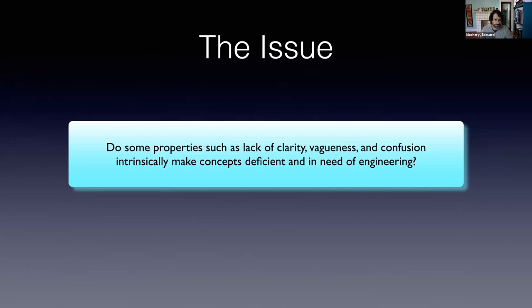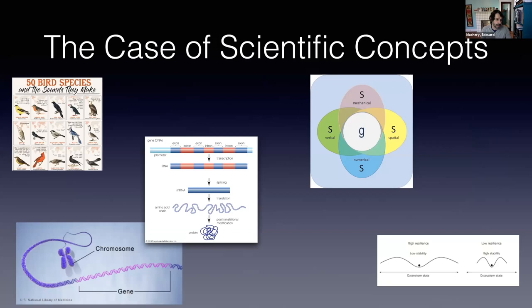For various reasons I will be focusing on scientific concepts. One reason is that the notion of explication, which is often for me the starting point of discussion, was originally formulated by Carnap in the context of developing concepts useful for science. A better reason is that there are actually a host of very well-developed case studies in the history and philosophy of science that help us think through these questions.